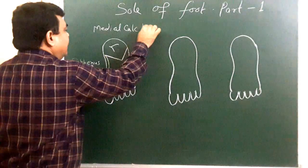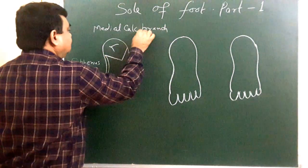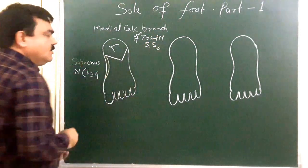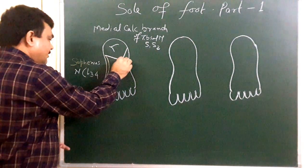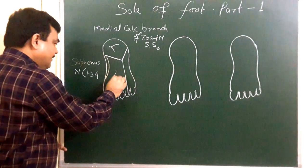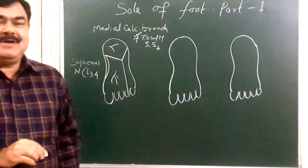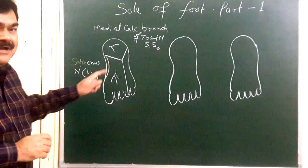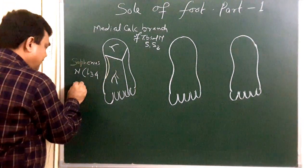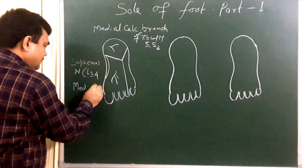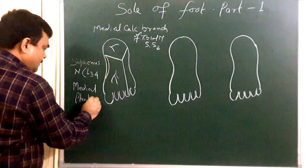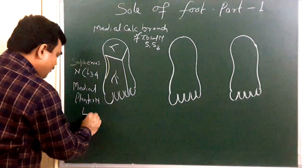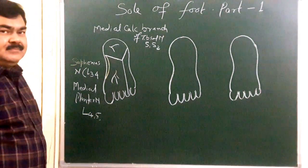Calcaneal branch of tibial nerve root value S1 S2. From here to here this area is supplied by or this area contains medial plantar nerve. This is medial plantar nerve root value of this is L4 L5.